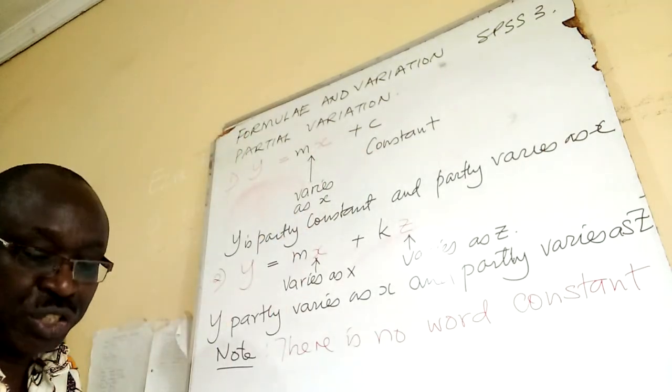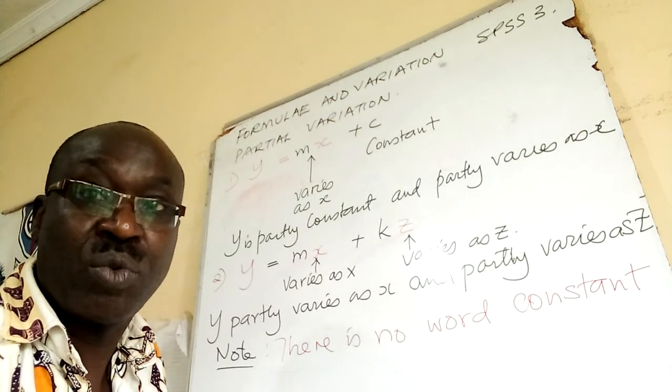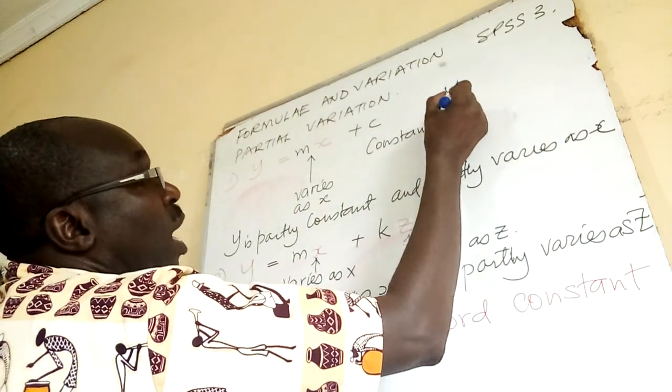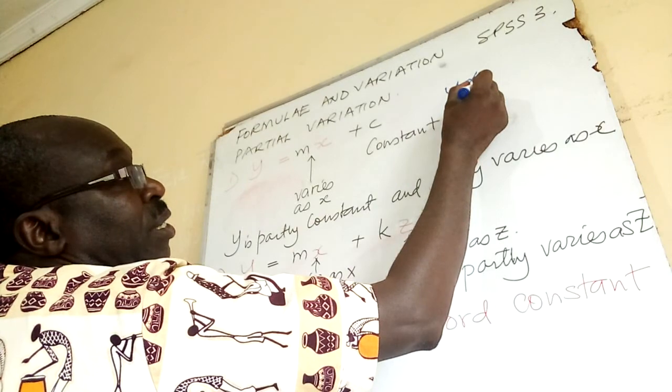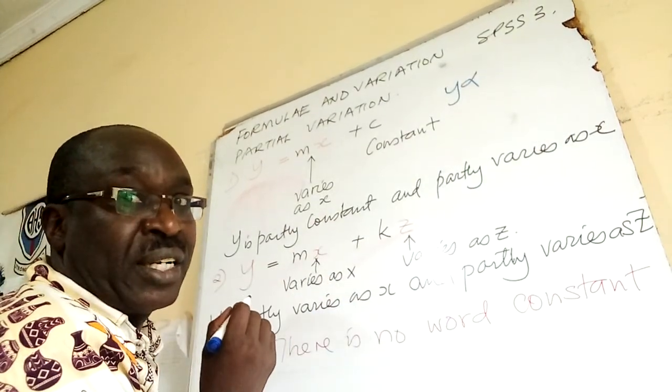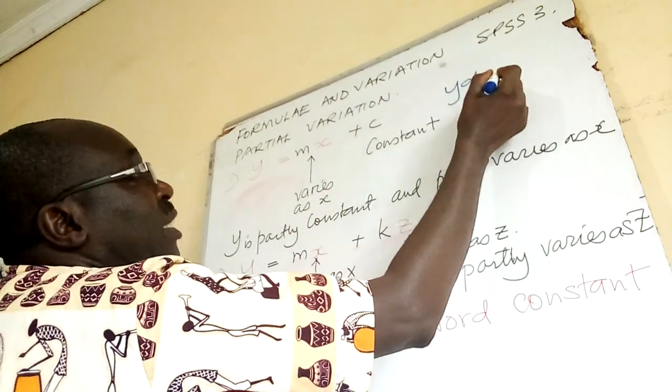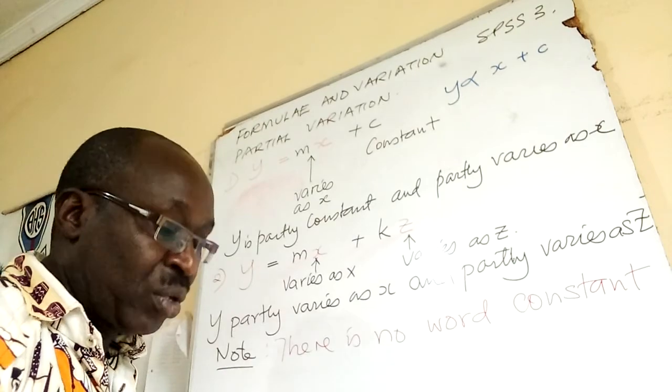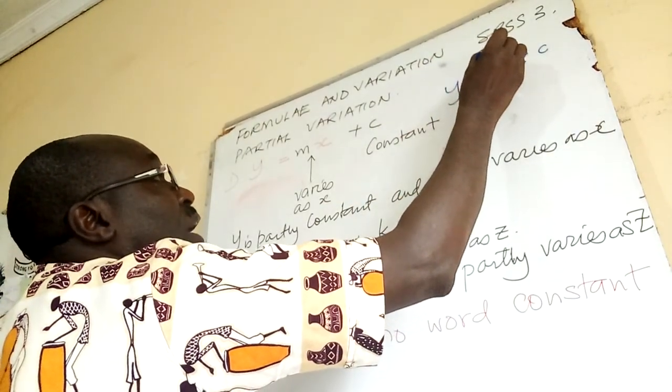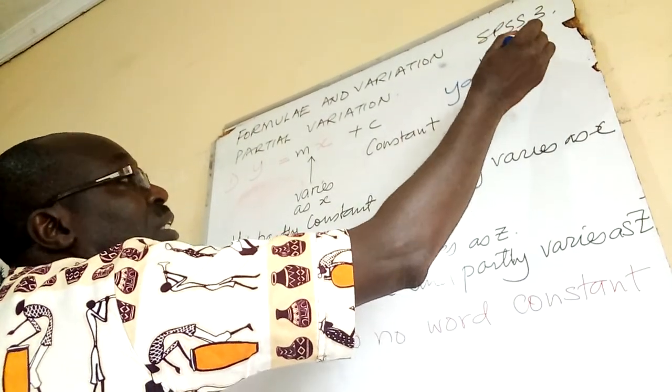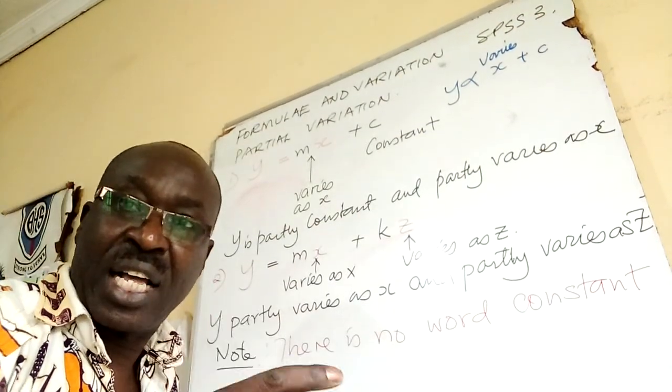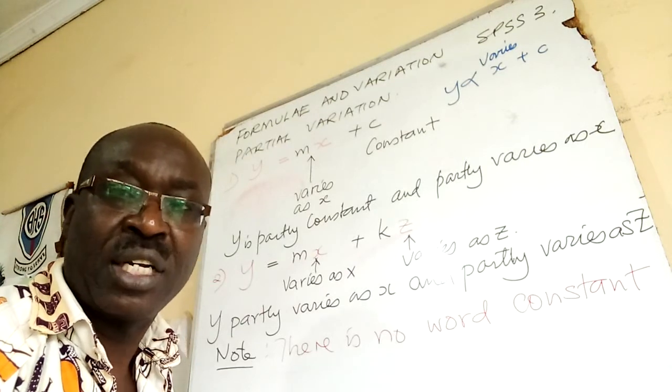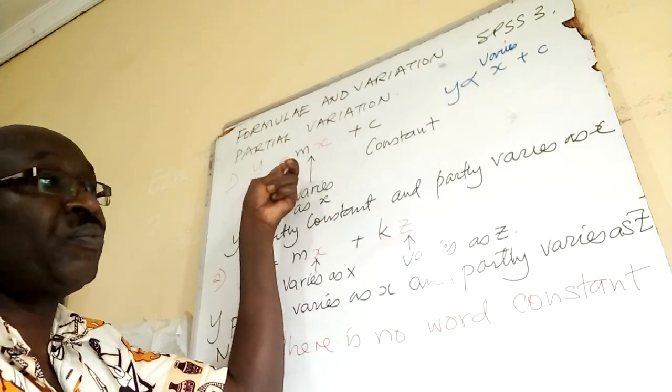And addition, partly varies as x. Varies as x requires another constant, which in our case is m. This is an equation that has been generated from a relationship y varies partly as x and a constant. So, this is where we have varies.